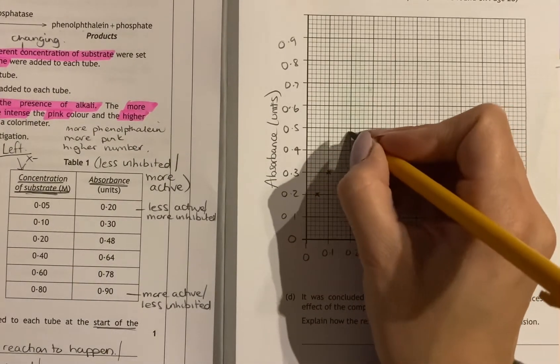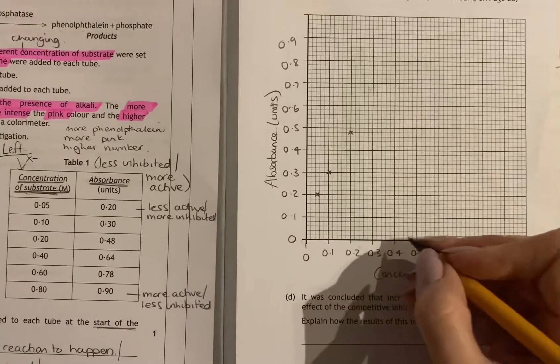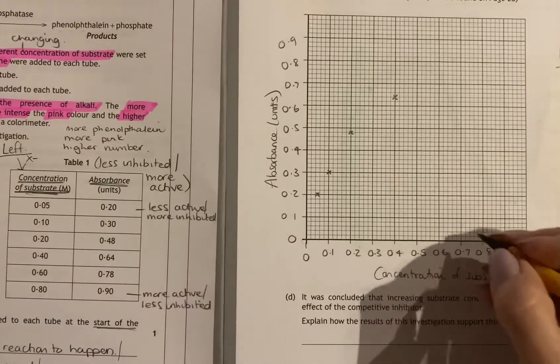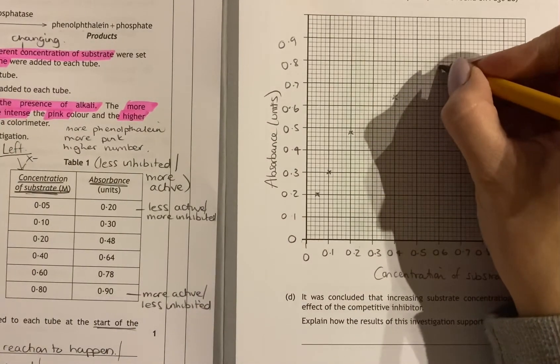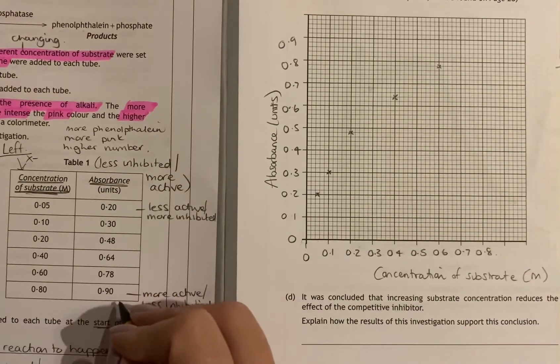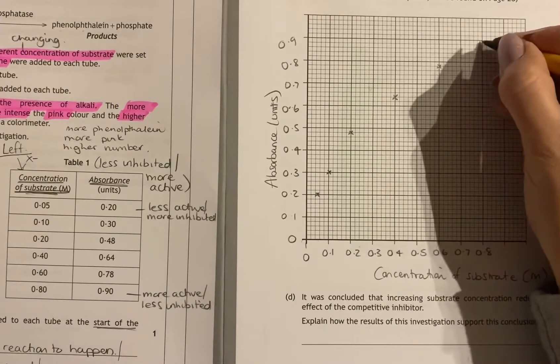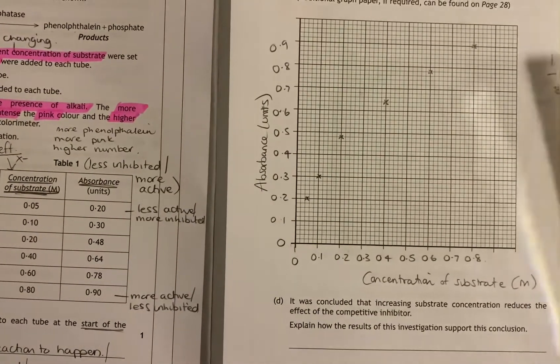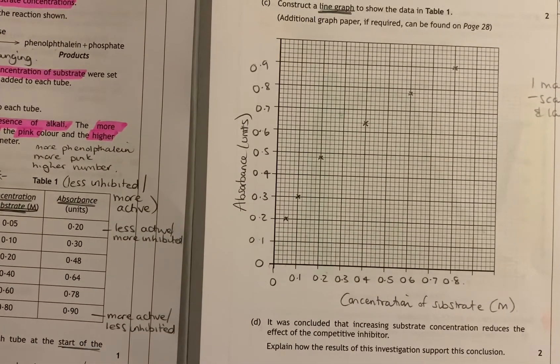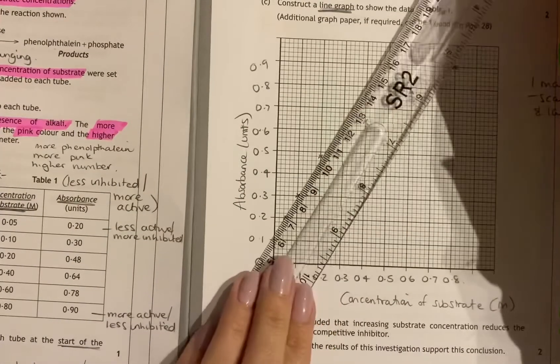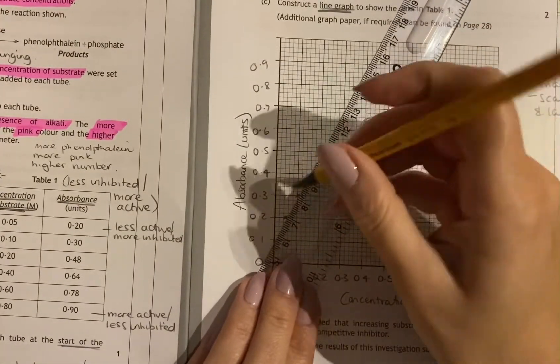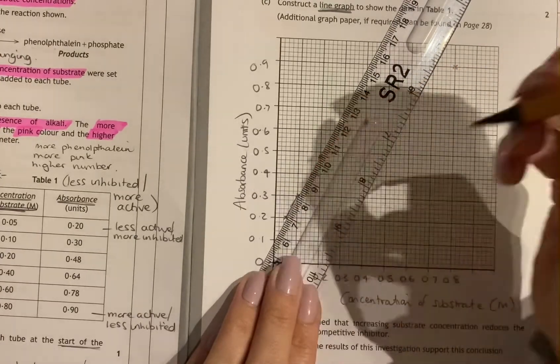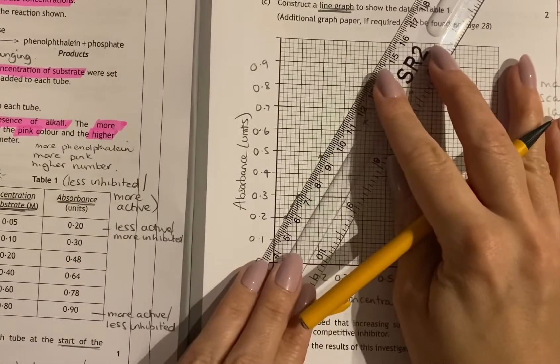So 0.2 is 0.48, 0.4 is 0.64, 0.6 is 0.78, and 0.8 is 0.9. When you're doing a graph, you must join the points from the center of your point to the next point. It's not a line of best fit like you would do in some other sciences. It's from the center of your point directly to the center of your next point. So basically a dot to dot.